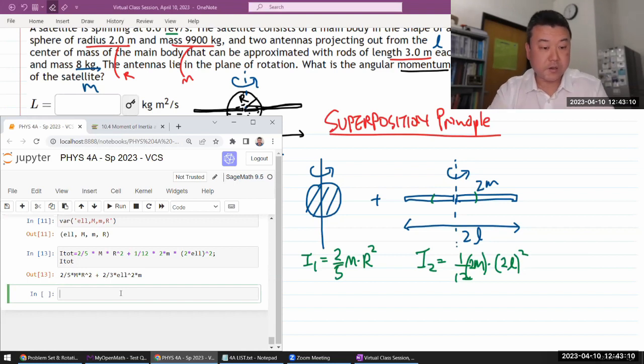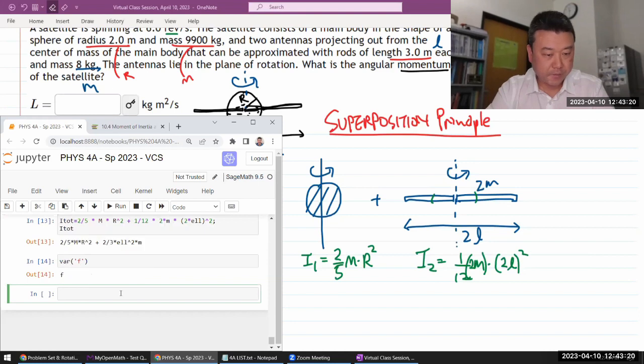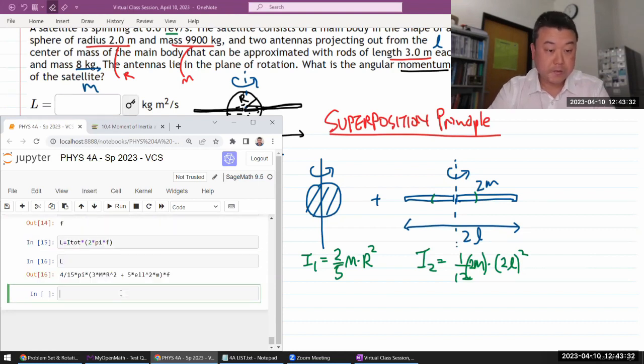All right, so for rotational inertia, really all you need is this times the—or sorry, I need my f being declared as a variable. Now I say my rotational inertia times 2π times frequency. That will give me my angular momentum. So let's plug in all the numbers and see if we get the correct answer.